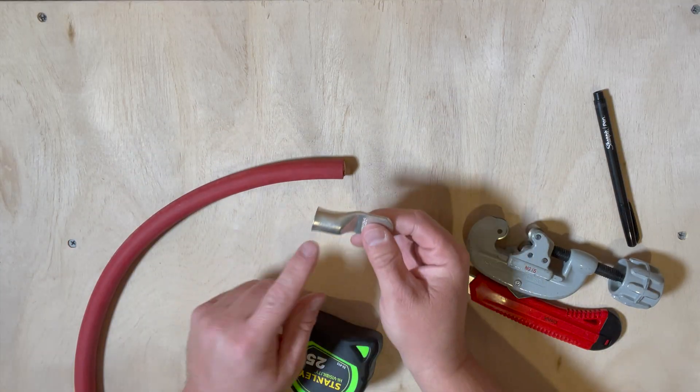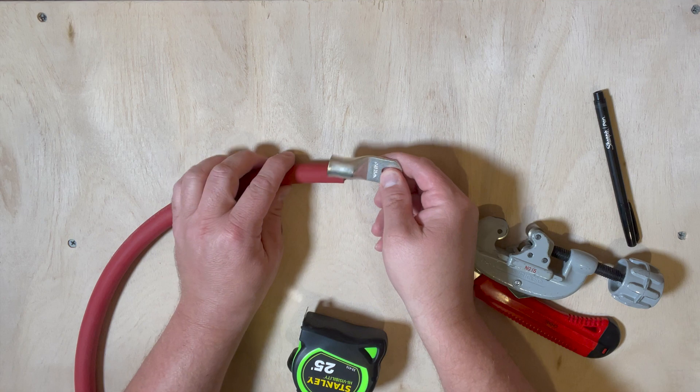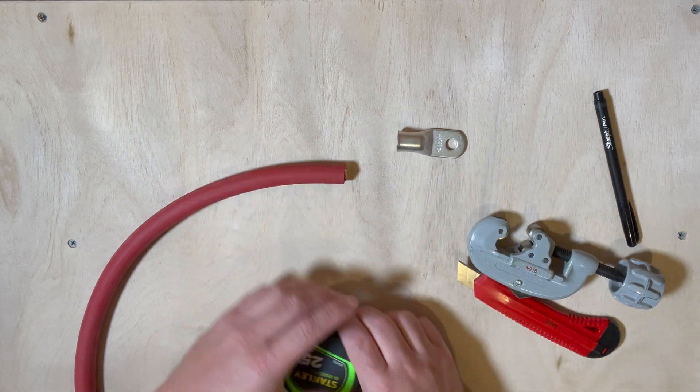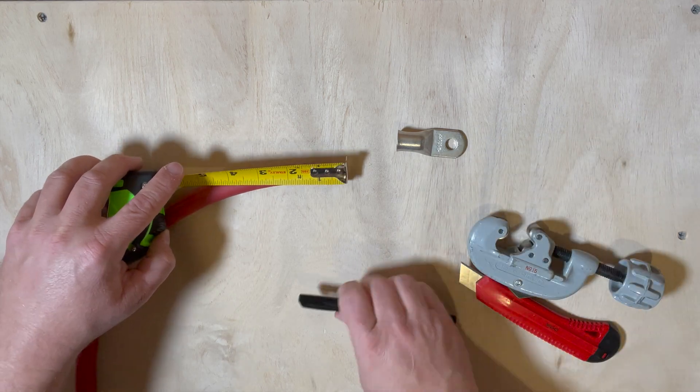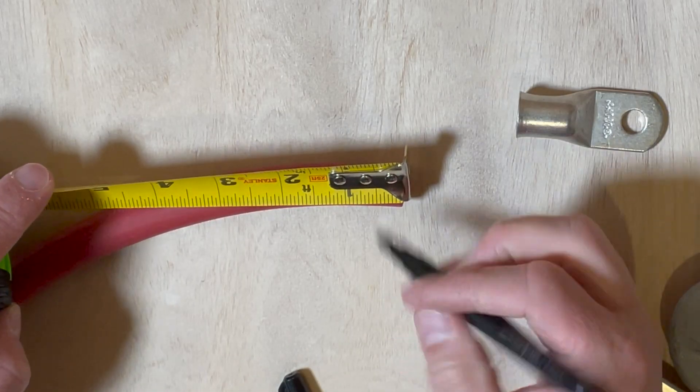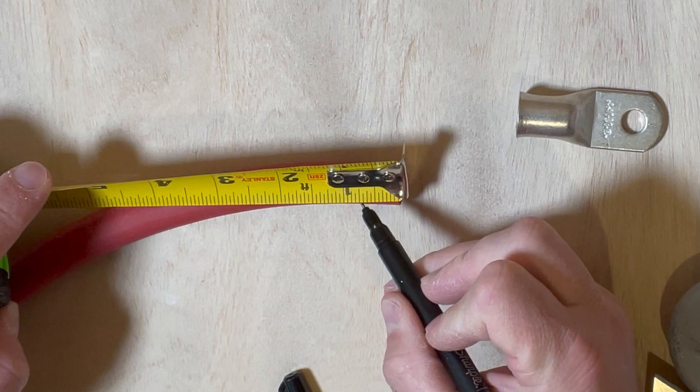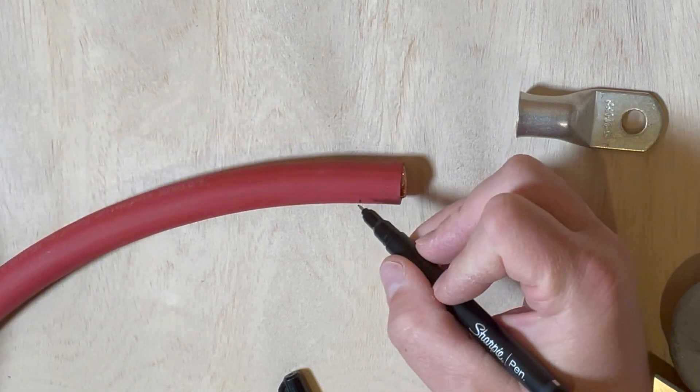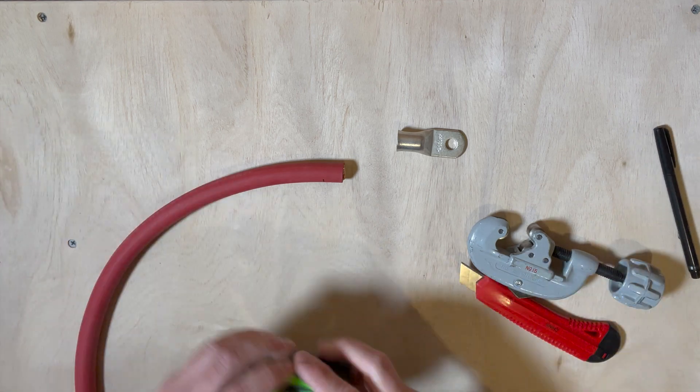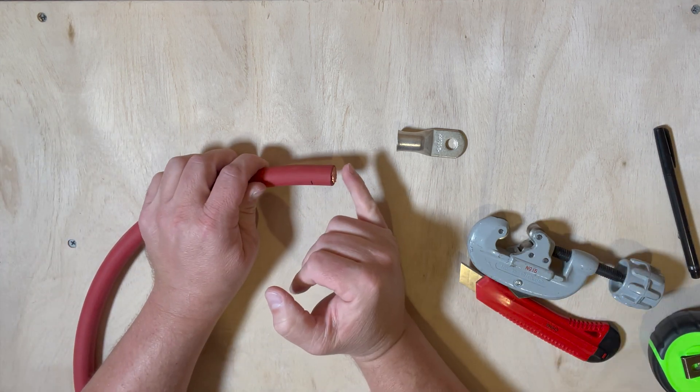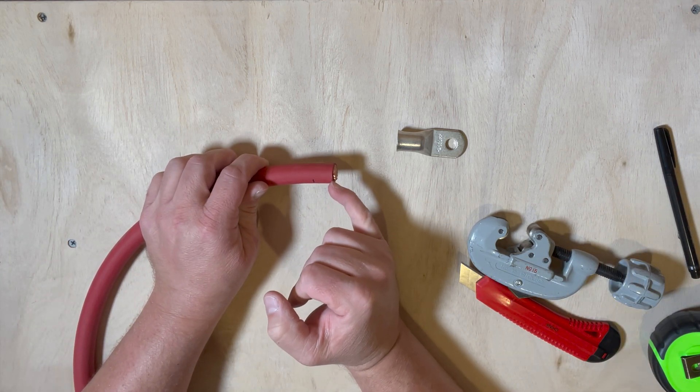First thing I'm going to do, I've got three quarters of an inch that's going to fit inside here. I've already measured that out. I'm going to go ahead and make my mark to three quarters of an inch. And I'm measuring from the copper, not the insulation.